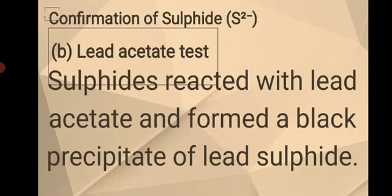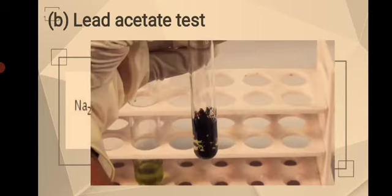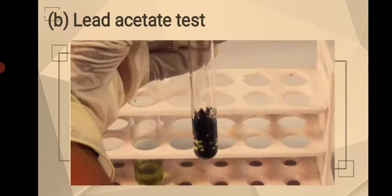For the second test for the confirmation of sulfide, which is the lead acetate test: based on the theory from olabs.com, sulfides react with lead acetate and form a black precipitate of lead sulfide. In the experiment, after adding lead acetate solution to a portion of the salt solution, a black precipitate was observed. It was concluded that the black precipitate was lead sulfide (PbS), confirming the presence of sulfide anion. The result shows a black solution with black precipitate at the bottom.